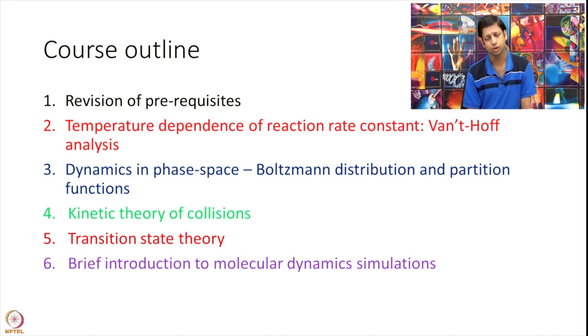After that, we will move on to understanding how to calculate rate constant. Particularly, we will start with Van't Hoff and Arrhenius analysis. These are the two people who really started the field of chemical kinetics in late 1800s. Beautiful work. And back then only they had written very fundamental equations on how rate constant changes with temperature. So we will look at that analysis.